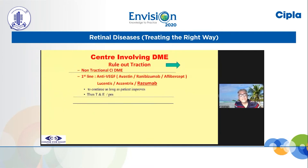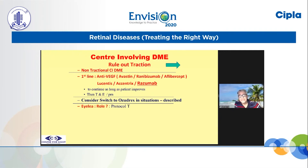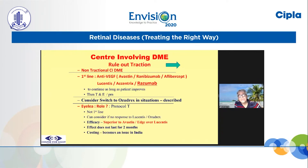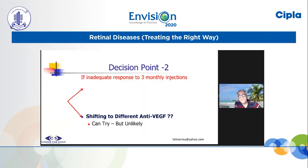For non-tractional DME, it comes to anti-VEGFs, and anti-VEGFs primarily Ranibizumab. I consider switching very fast from anti-VEGFs to steroids. There is a lot of question about when to switch — should you switch from Lucentis to Aflibercept, or from Bevacizumab to Ranibizumab?